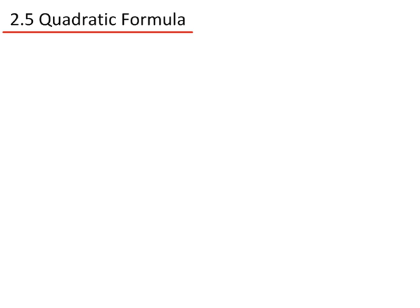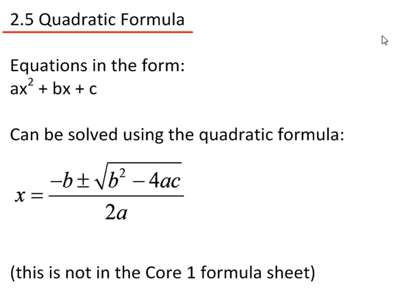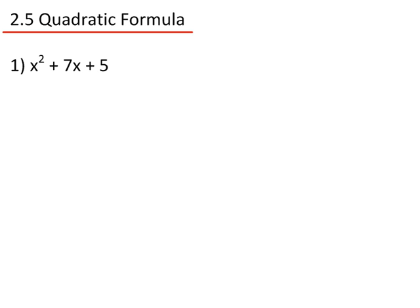2.5: The Quadratic Formula. Equations in the form ax² + bx + c can be solved using the quadratic formula: x equals minus b plus or minus the square root of b squared minus 4ac, divided by 2a. This is not in the Core 1 formula sheet and so it must be memorised. Let's do some examples.